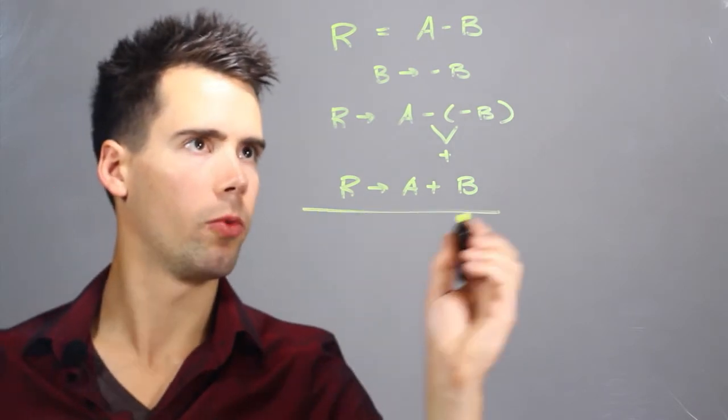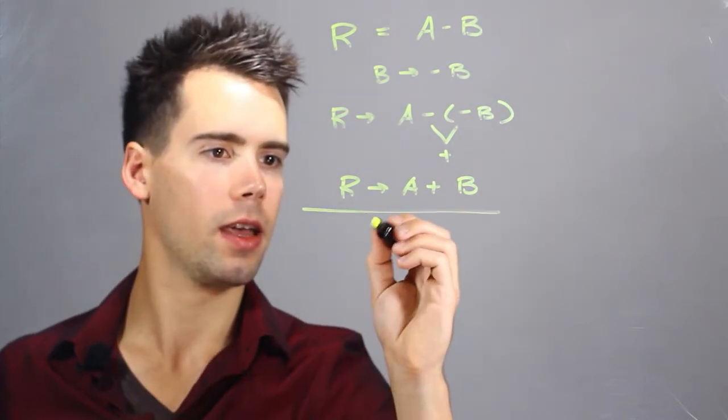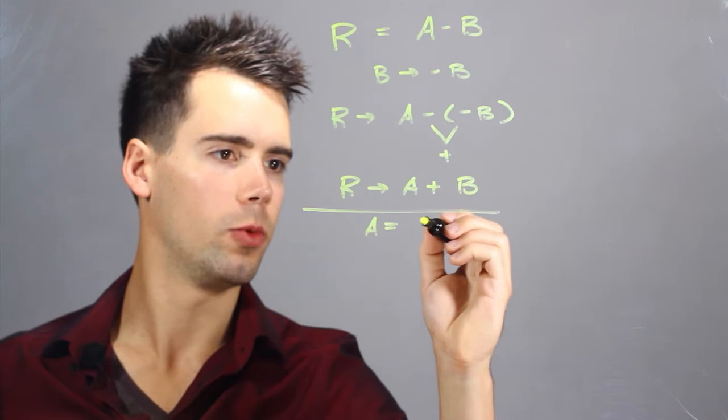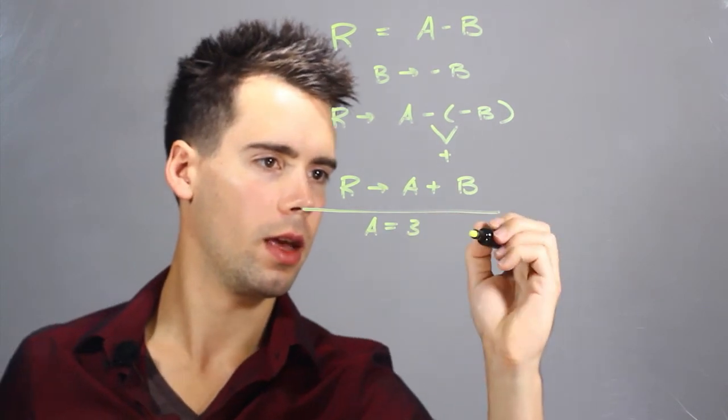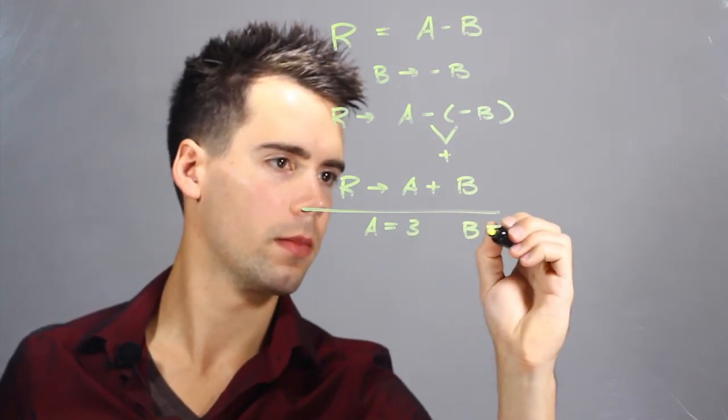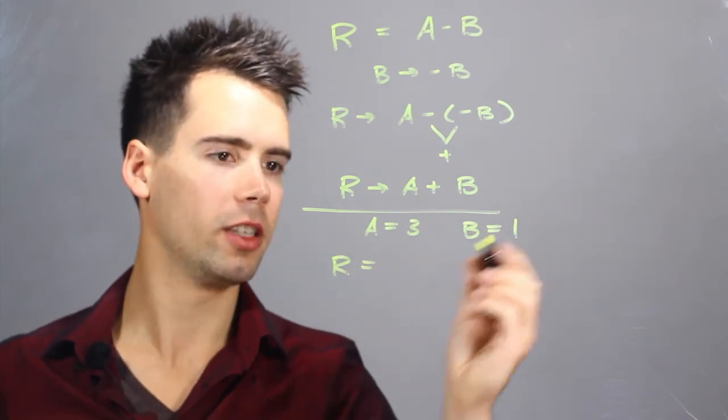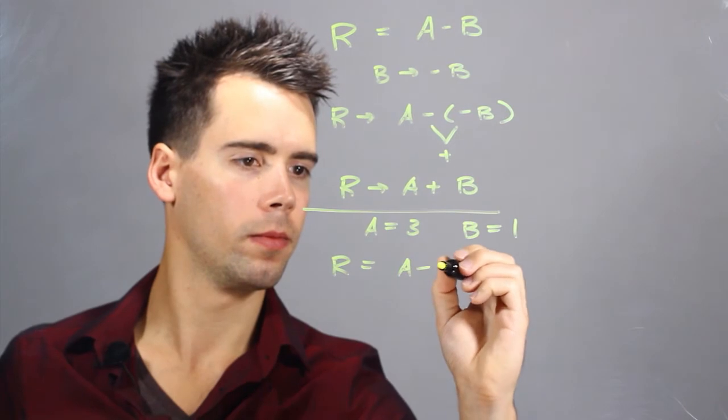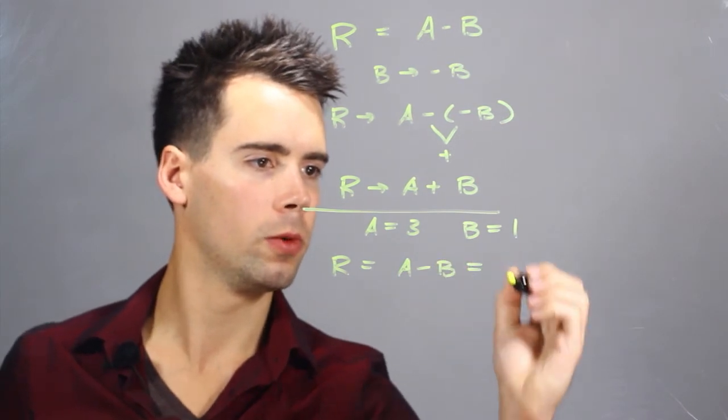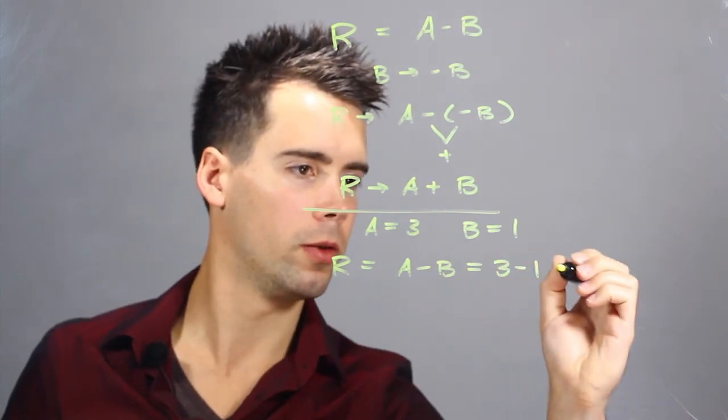Now looking at an example with real numbers, let's say A equals 3 and set B equal to 1. So initially R is equal to A minus B, which is equal to 3 minus 1, which equals 2.